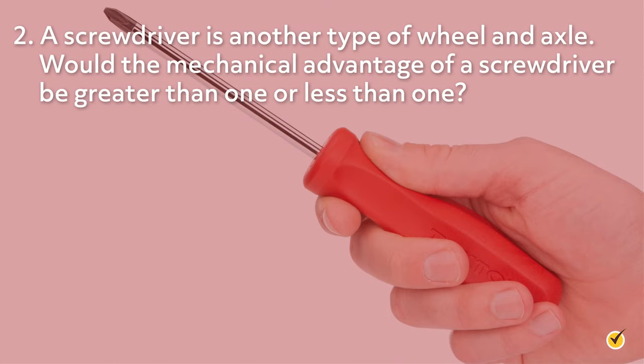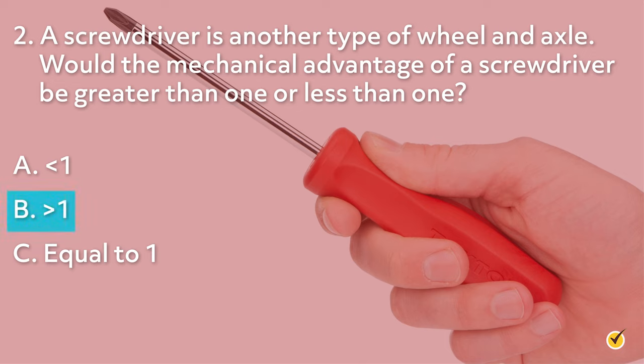Number two: a screwdriver is another type of wheel and axle. Would the mechanical advantage of a screwdriver be greater than one or less than one? A: Less than one. B: Greater than one. Or C: Equal to one. The correct answer is B. The force is applied to the handle of a screwdriver, which makes it the wheel part of the system. This means MA equals R over r, where R is the handle radius and r is the axle radius, which is smaller. That's all for our video on wheels and axles. Thanks for watching, and happy studying!